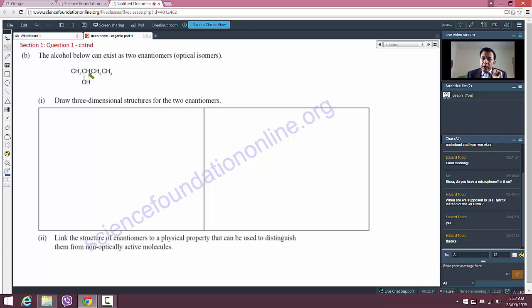It says draw three-dimensional structures for the two enantiomers. Now let's go to the next page where I've actually drawn this to help us along.